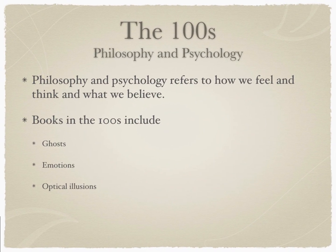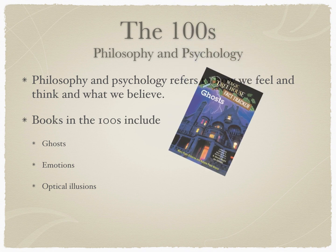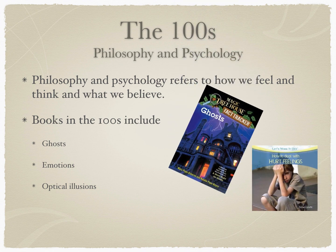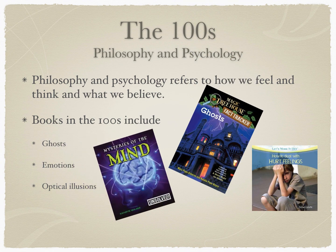The One Hundreds: Philosophy and Psychology. Philosophy and Psychology refers to how we feel and think and what we believe. Books in the One Hundreds include Ghosts, Emotions, and Optical Illusions.